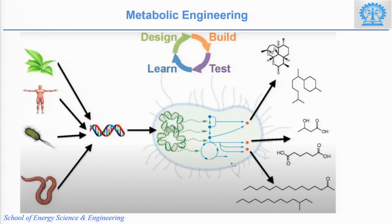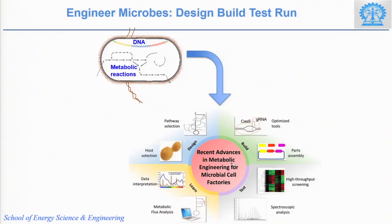Through genetic engineering you can insert any pathway and produce your desired product. This cycle is known as Design-Build-Test-Learn. Using this cycle, through design you will be designing a host and the metabolic pathway you want to engineer in the cell. Based on literature and databases you can identify the metabolic pathway suitable for production in the microbe, then design it and put those pathways using genetic engineering tools like CRISPR-Cas9, build and assemble the parts, then analyze and test how much it is producing. Further, you can optimize the metabolic pathway, interpret the results, and then design again.